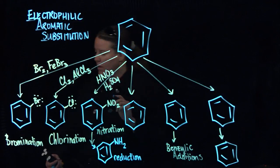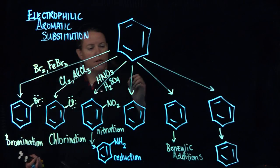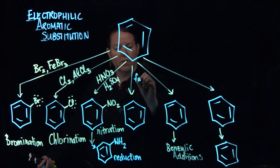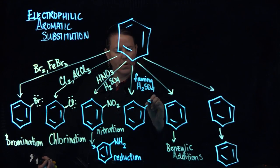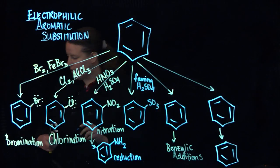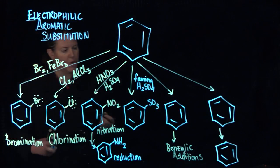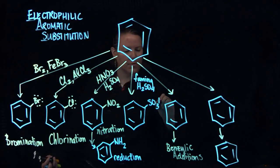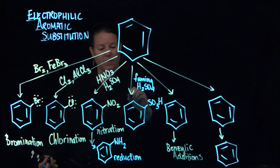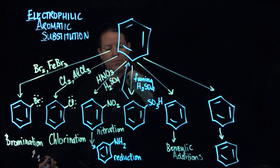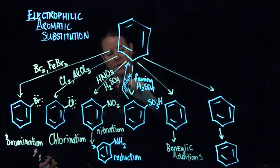You could do, you have a couple of options here. If you do fuming H2SO4, then you're going to form an SO3 group on there, which is awesome. That SO3, actually it's an SO3H group that forms on there, but realize that you can take that off by using just dilute H2SO4.